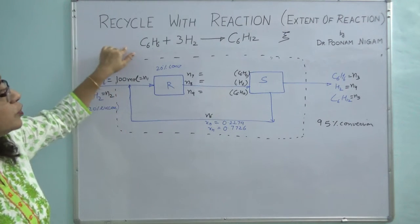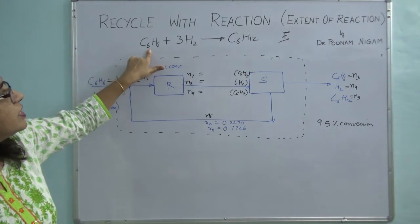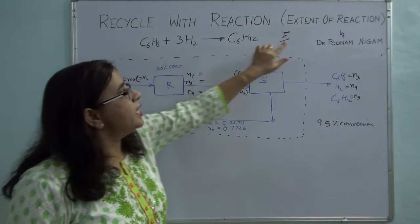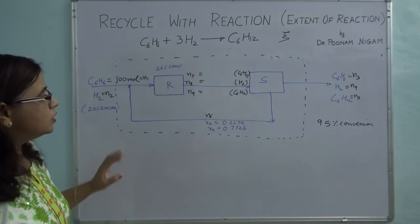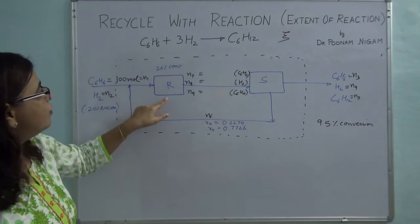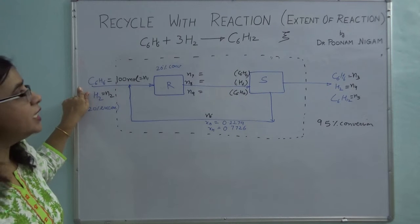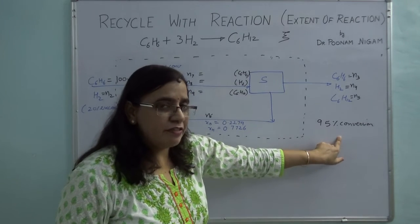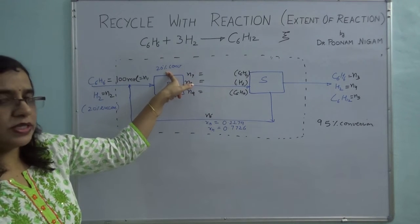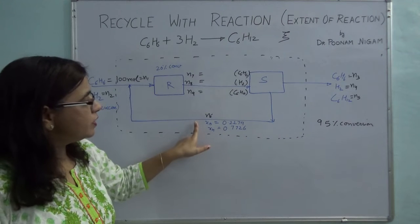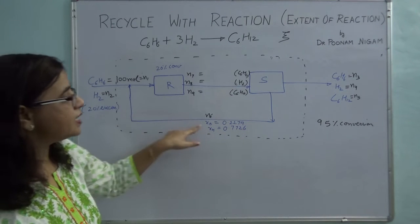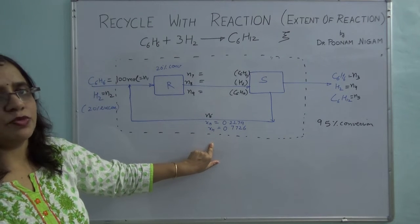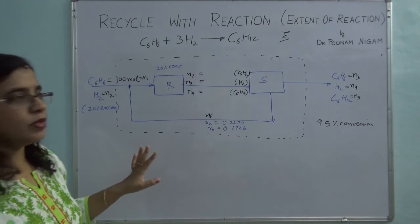This is a problem from Himmelblow. The reaction which is given is benzene being hydrogenated to give cyclohexane. I am marking zeta as my extent of reaction. Now the things which have been given in this problem: you have a reactor, you have the fresh feed which is going in. It contains only benzene and hydrogen. Overall conversion is given as 95%, single pass conversion is 20%, and the recycle stream has a composition — the mole fraction of benzene and hydrogen are given in this problem.